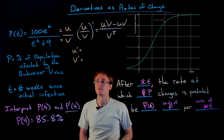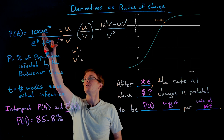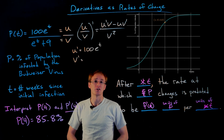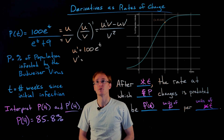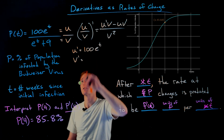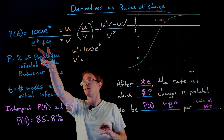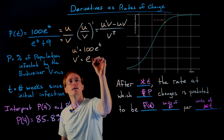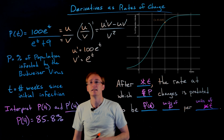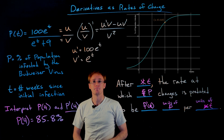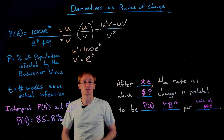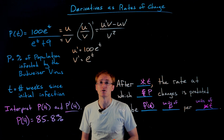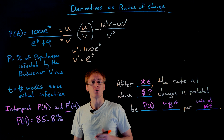The two pieces we need are u prime and v prime, which are quick to find. The derivative of u — 100 times e to the t — is itself, since the derivative of a constant multiple of the natural exponential function doesn't change. For v prime, the derivative of the constant 9 disappears and the derivative of e to the t is still e to the t. Now we have all the pieces to plug into our formula.